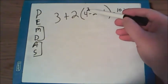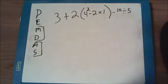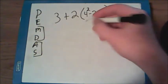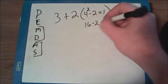So within our parentheses, we can either look at the exponent, the subtraction, or the multiplication first. According to the order of operations, we then need to do exponents first. So 4 squared is 16 and I'll copy down everything else.